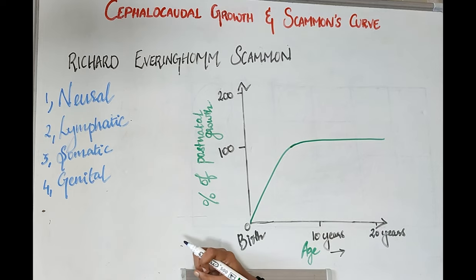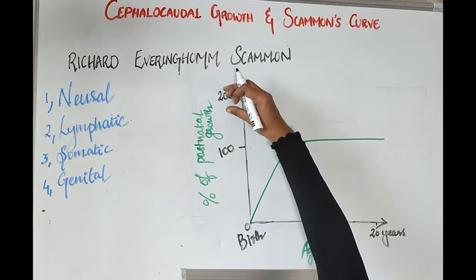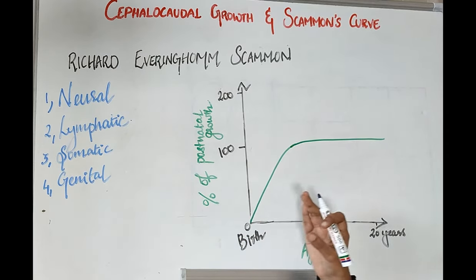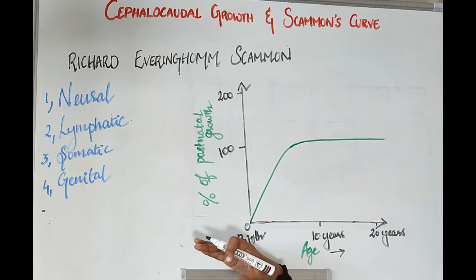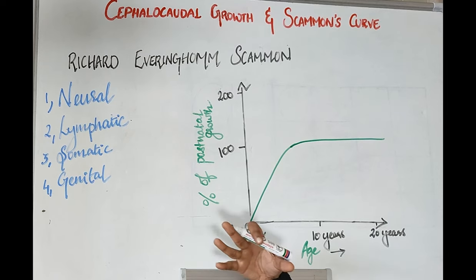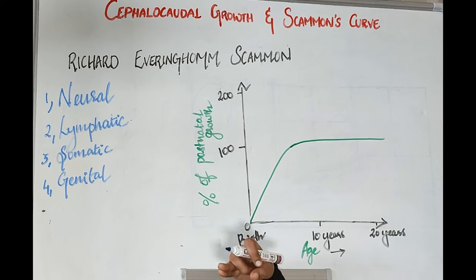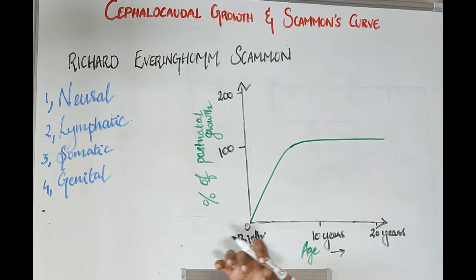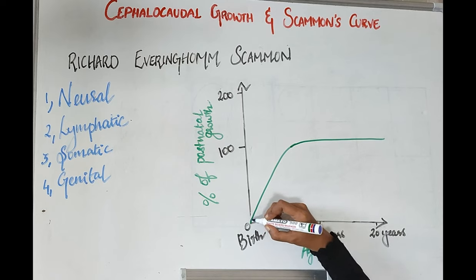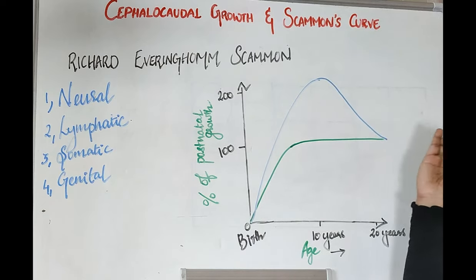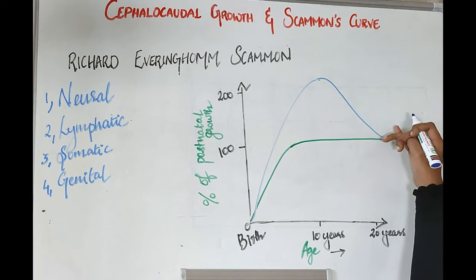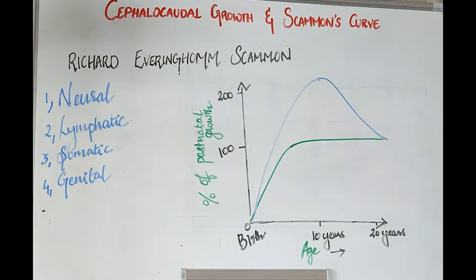Second, lymphatic tissues. These tissues will reach their maximum size of almost about 200% of adult size during late childhood. After puberty, when the genital tissues start growing, the lymphatic tissues will undergo regression. These tissues are very important because they protect us from infections. Examples include the thymus and tonsils. These tonsils and thymus will be larger during late childhood, and after puberty we can see shrinkage or regression of these lymphoid tissues.